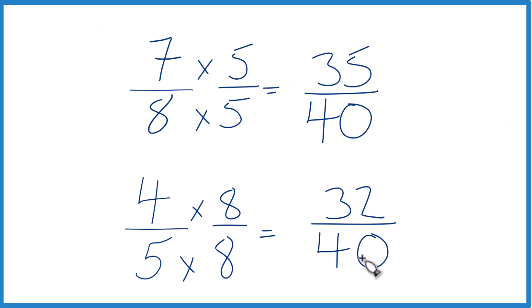Same denominator, let's just compare the numerators. 35 is greater than 32. 35 fortieths, that's greater than 32 fortieths, by 3 fortieths.